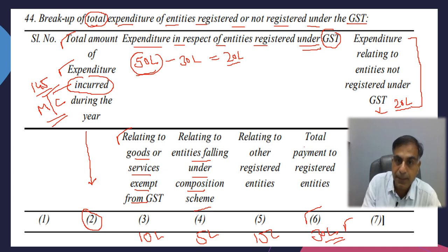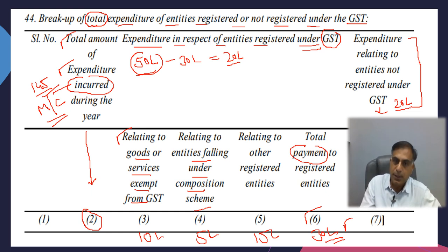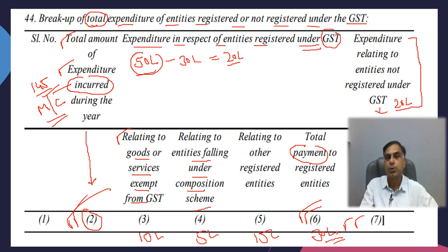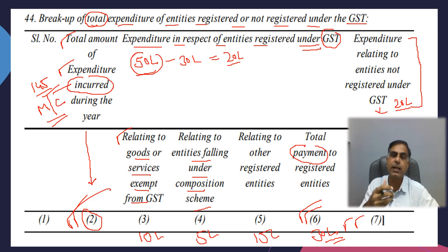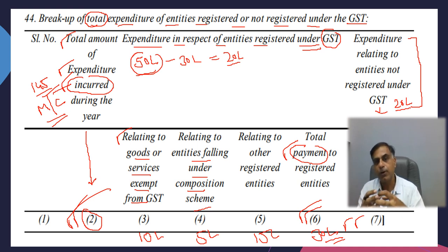Some of you may object: Mr. Bhatia, please see what is written here — 'total payment.' I would say the terminology 'total payment' would not fit into this particular format of Clause 44, because Column 6 and Column 7 added together would form Column 2 — that is amount of expenditure incurred on GST entities plus amount incurred on non-GST entities equals total. So 'hereof' in my understanding is a form error. This is not a law — a form may have mistakes — and the person writing it may not have had this point in mind. In my opinion, the term here should be interpreted as 'incurred.' Only then will your reporting be proper.